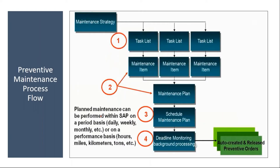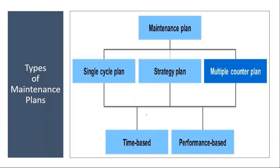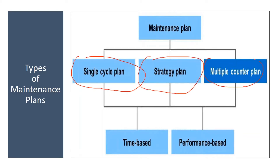In preventive maintenance, this is the flow we are covering. We created the strategy, this maintenance strategy is assigned to the task list, then we created the various maintenance plans — single cycle and multiple cycle strategy plans. In the plans, in the item, we assigned the task list, then we scheduled it. After that we run the deadline monitoring, and once a particular criteria is reached the system generates orders automatically. So far in the maintenance plan we covered single cycle plan and strategy plan. Today we will see the multiple counter plan.